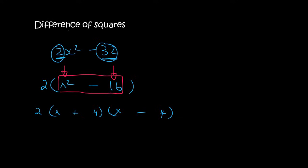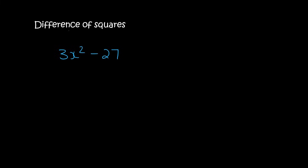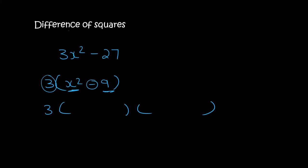For every single factorizing question, always try to take something out first. So here there's no direct difference of squares, but the number 3 fits into both terms. We take it out: 3(x² - 9). Now x times x gives x², and 3 times 3 gives 9, and there's a minus between them. So we open up two brackets — the 3 stays in front — giving us 3(x + 3)(x - 3).